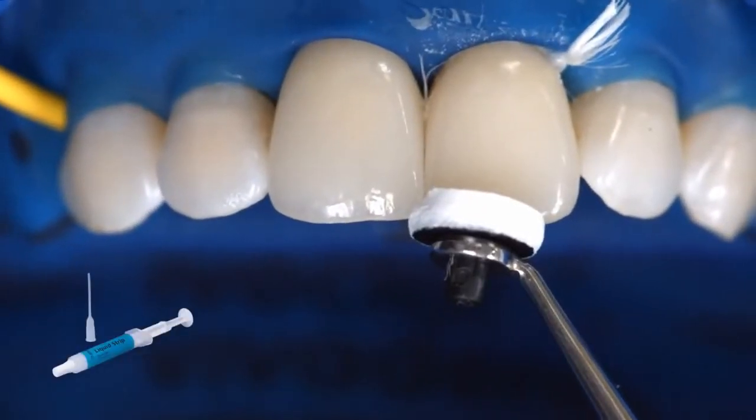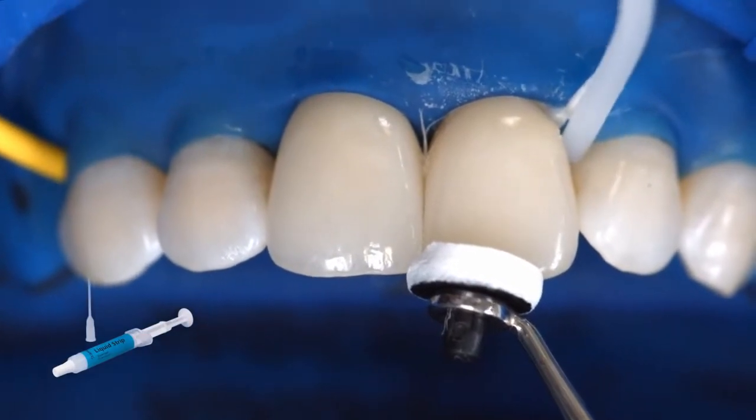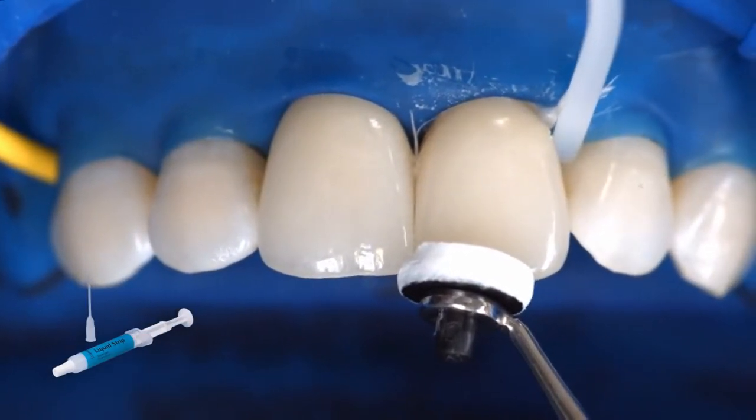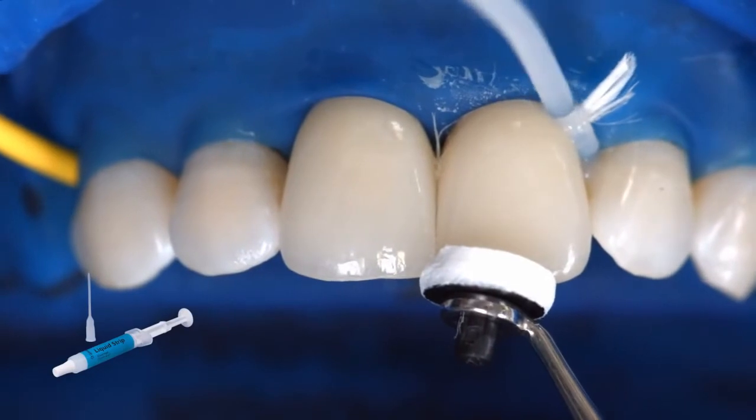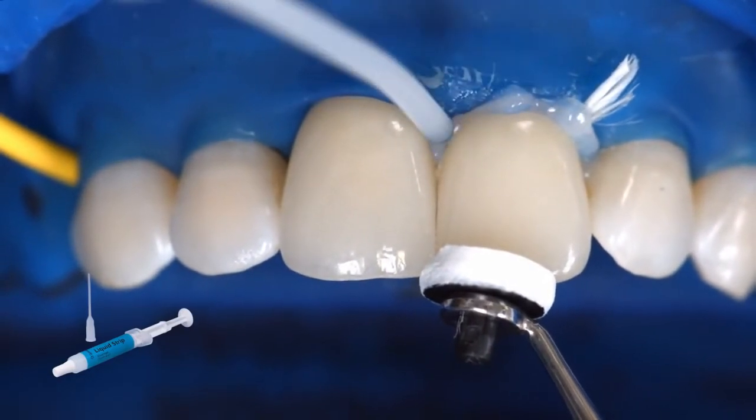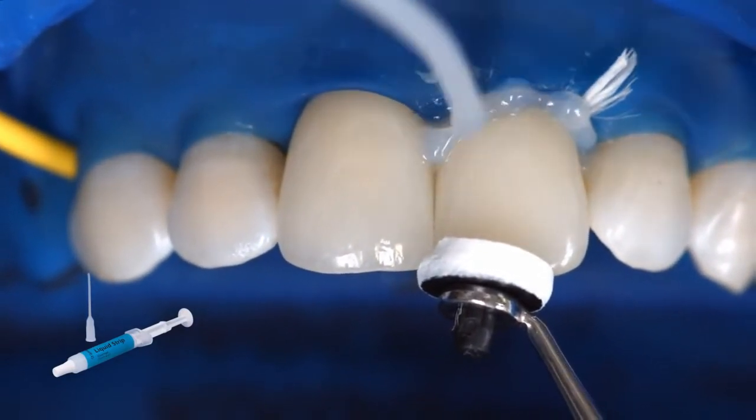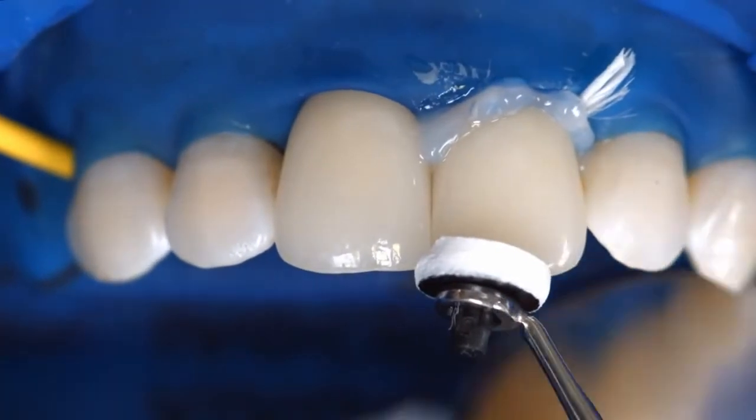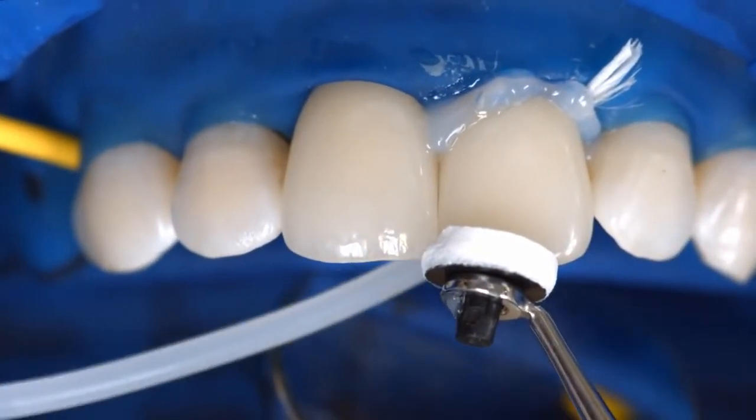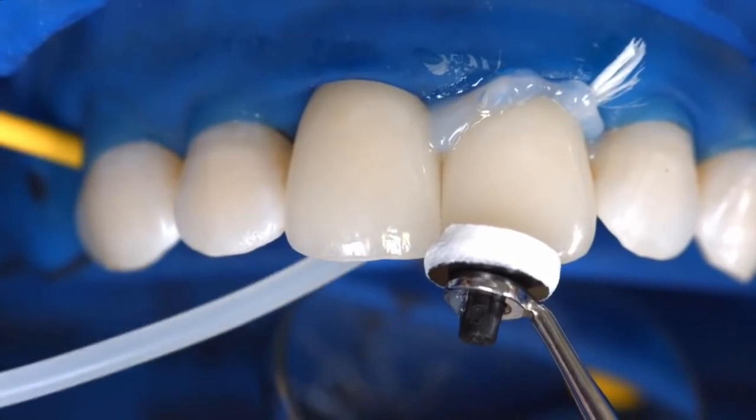Like all other composite resins, Variolink Aesthetic LC is subject to oxygen inhibition. To counteract this effect, cover the restoration margins with glycerin gel or air block immediately after having removed the excess cement. Liquid Strip is an ideal product for this purpose.